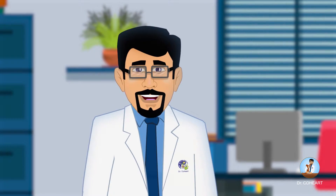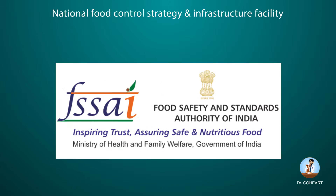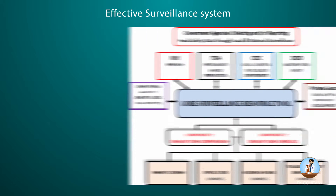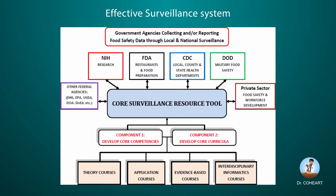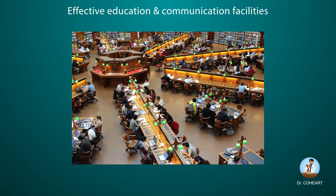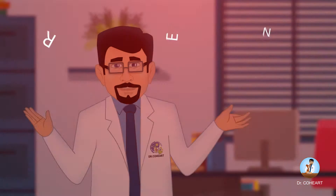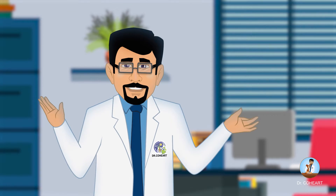The country should have an operational food safety system with adequate food laws and regulations, national food control strategy and infrastructure, effective surveillance systems, inspection and laboratory facilities, and effective education and communication facilities.